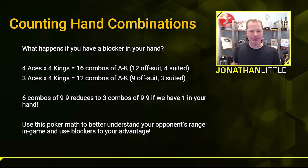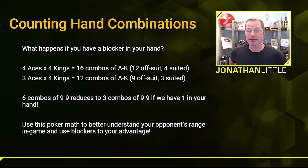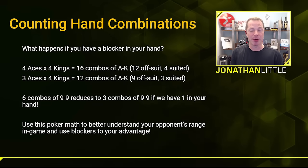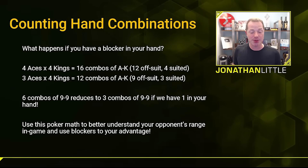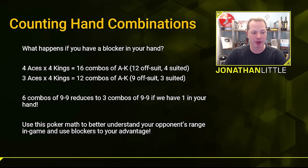You can use this math to better understand your opponent's range in game and use blockers to your advantage. For example, say you have the ace of spades in your hand and there are three spades on the flop, but no more come on the turn or river. You're sitting there with ace-high with the ace of spades. This is usually a really good spot to bluff, because you know your opponent will have fewer flush combinations in their range — most people play all the suited ace-x hands, and by removing those because you have the blocker, that's usually going to result in a pretty good bluffing opportunity.